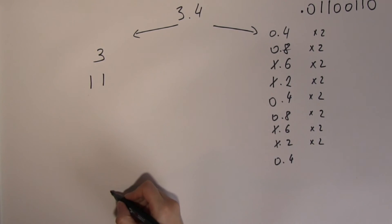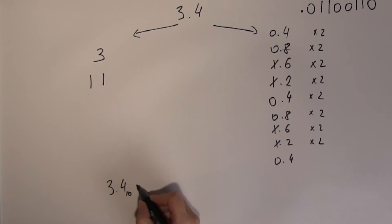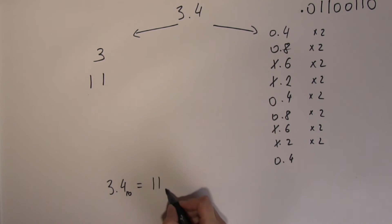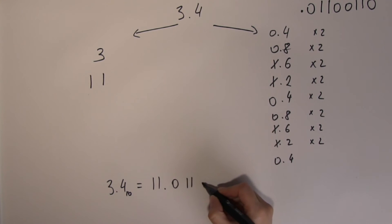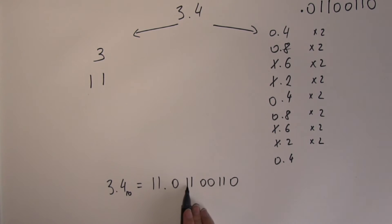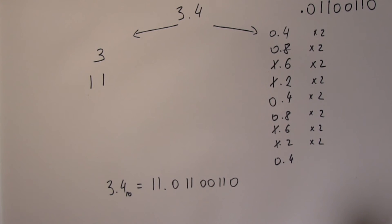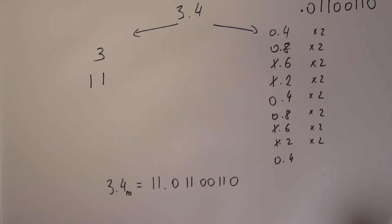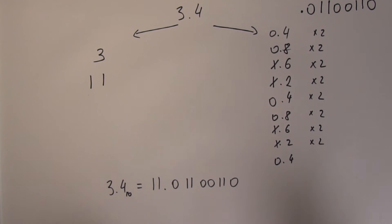So 3.4 in decimal would be 11.01100110011... in binary — 8 or more places recurring. As I mentioned in the last video, this is a fundamentally inherent property of the binary number system. We can't really do anything about it, but by using more binary digits to represent the decimal numbers, we can minimize this problem.